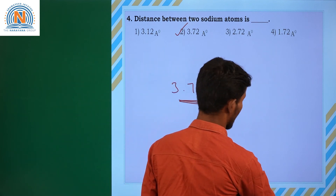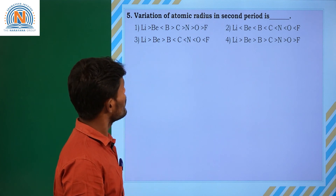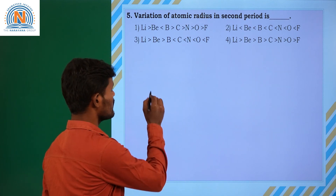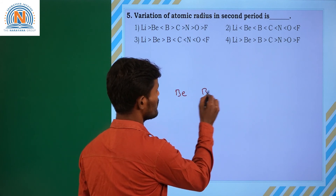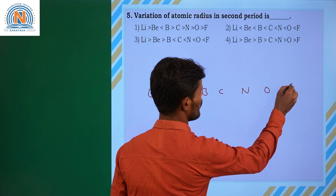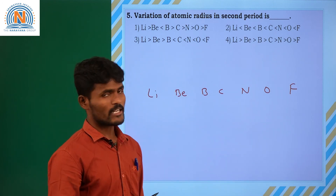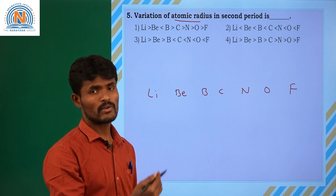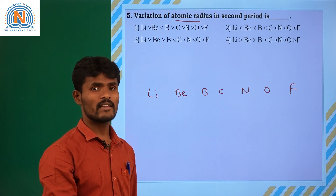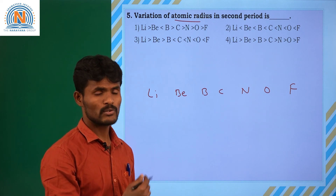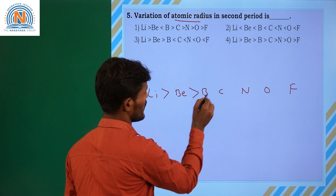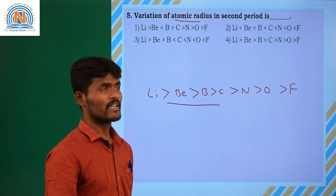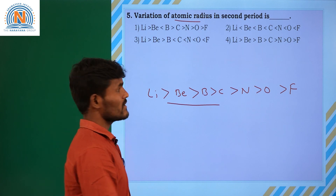Fifth question: variation of atomic radius in the second period. What are the elements in the second period? Lithium, beryllium, boron, carbon, nitrogen, oxygen, fluorine. Actually, atomic radius decreases across the period from left to right. So write the greater-than symbol — this is the variation of atomic radius in the second period, and the answer is the fourth option.